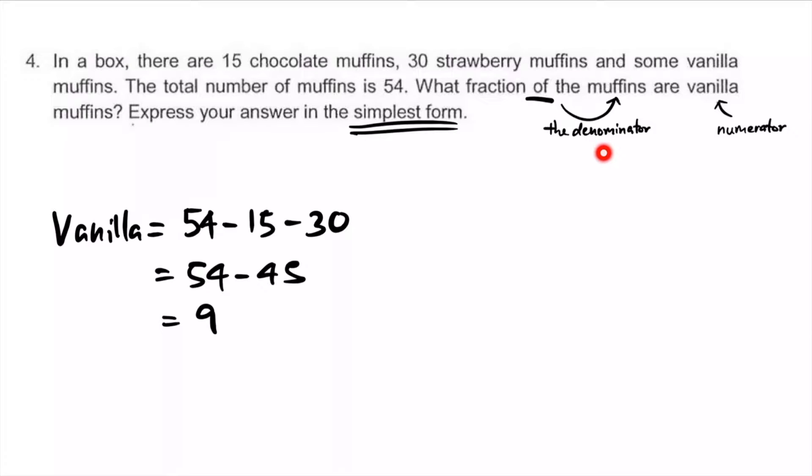In this case, the denominator is 54, the total. What fraction of that are vanilla? We've obtained vanilla equals 9. The required fraction is 9 over 54, but special requirement wants simplest form. Divide by 9 throughout and we get 1 over 6.